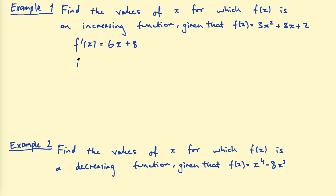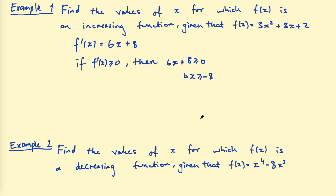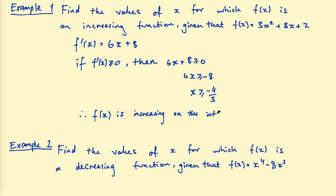The next step: if f'(x) ≥ 0, then 6x + 8 ≥ 0, because that's the derivative and we're looking for where the function is increasing. Now we solve this inequality: subtract 8 from both sides to get 6x ≥ −8, then divide by 6 and simplify by dividing by 2, giving x ≥ −4/3. So f(x) is increasing on the interval x ≥ −4/3.